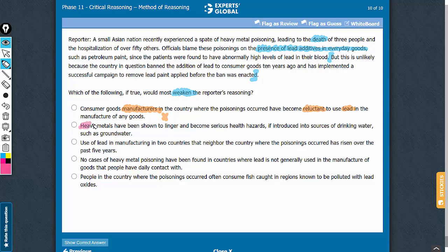Answer choice B gives an alternate reason that may have led to the health hazard and, therefore, this answer choice also strengthens and not weakens the argument. We need an answer choice that suggests that presence of lead may have led to the deaths.